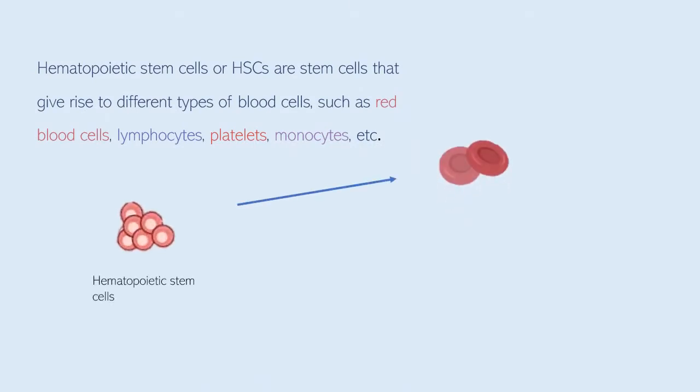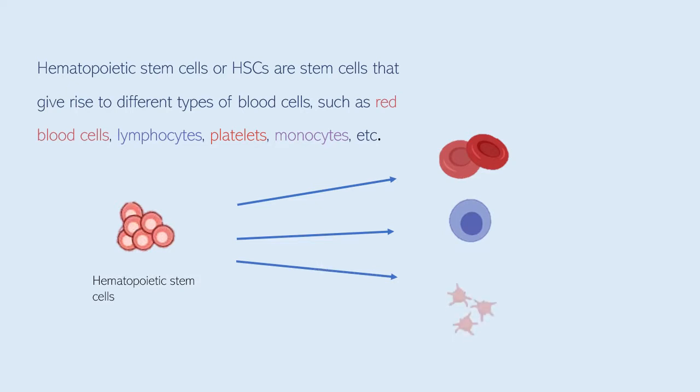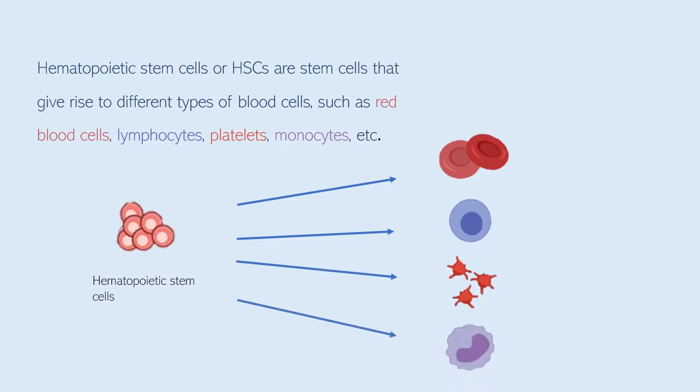Hematopoietic stem cells, or HSC cells, are stem cells that give rise to different types of blood cells such as red blood cells, lymphocytes, platelets, monocytes, etc.